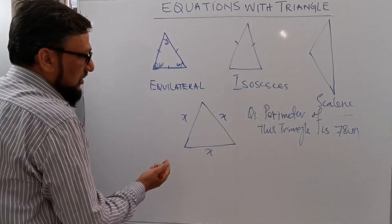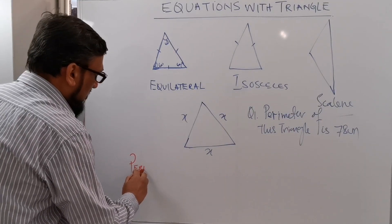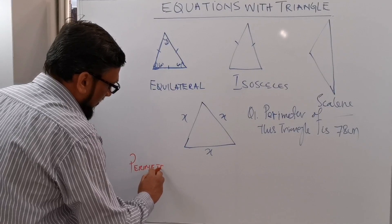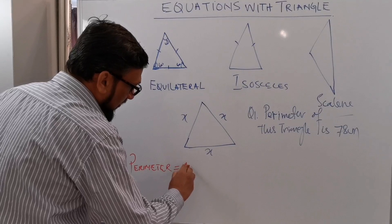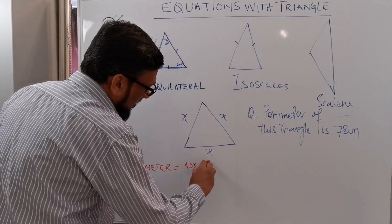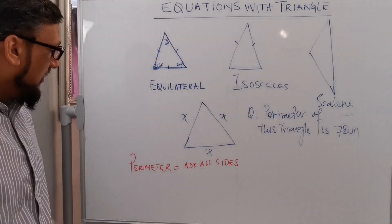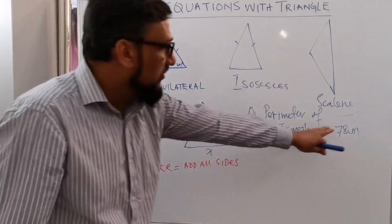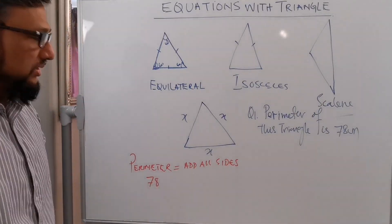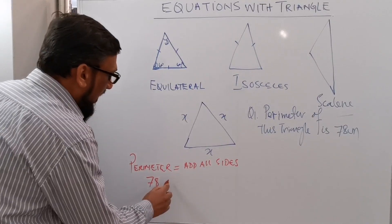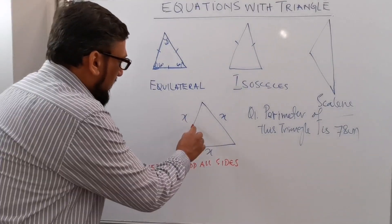The perimeter of this equilateral triangle is 78 centimeters. As we know, perimeter means you need to add all sides to get the perimeter. The perimeter is already given which is 78, and we add all sides.